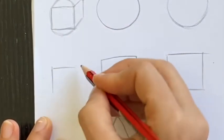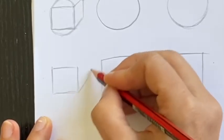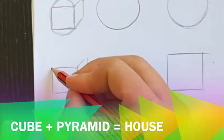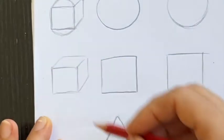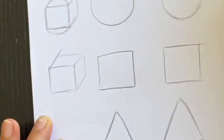So I've got my square projecting back to make my cube. I'm now going to put a triangle on top, so if I pop my triangle at the front I can actually bring it back and make more of a pyramid out of that.